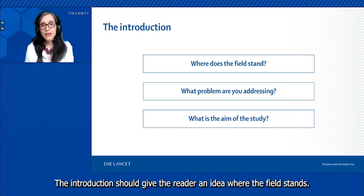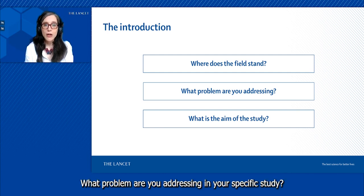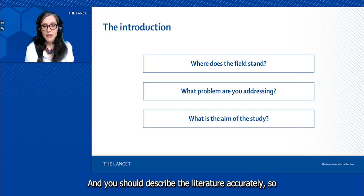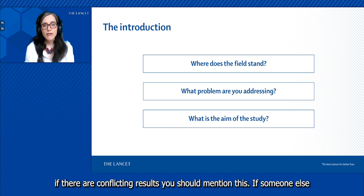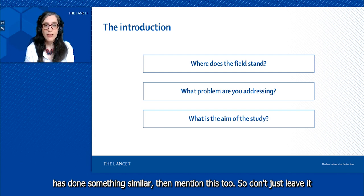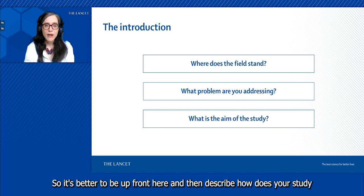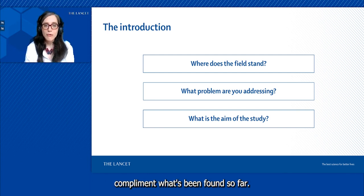The introduction should give the reader an idea where the field stands and what problem are you addressing in your specific study. What was the question, what did you do, what was the aim, why did you do your study? You should describe the literature accurately. If there are conflicting results, you should mention this. If someone else has done something similar, then mention this too. It's better to be upfront here and then describe how does your study complement what's been found so far.